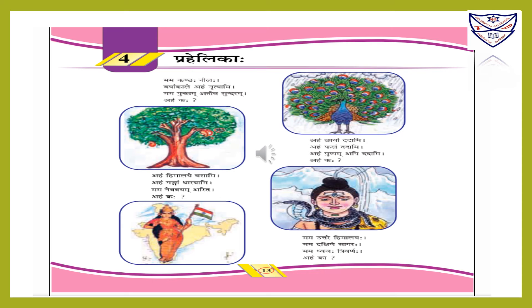Aham himalay vasami means I live on the Himalayas. Aham Ganga dharyami means I hold the Ganga river. Mama netra trayam asti means I have three eyes. Aham kaha — who am I? Who lives on the Himalayas, holds the Ganga, and has three eyes? Yes, you are right — Lord Shiva! The answer is Maha Deva Shankara.